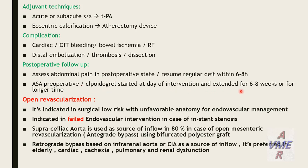The second option for revascularization in chronic mesenteric ischemia is open revascularization. It is indicated in surgical low-risk patients with unfavorable anatomy for endovascular management and in cases of failed endovascular intervention. In 80% of open mesenteric revascularization cases, the supra-celiac aorta is used as the inflow source, with an antegrade bypass using a bifurcated polyester graft.